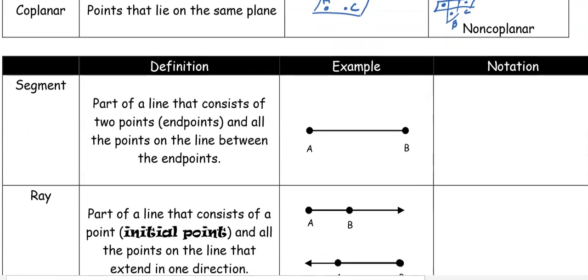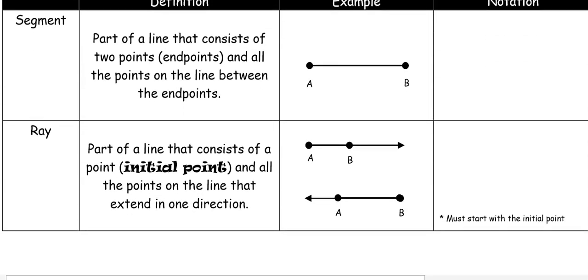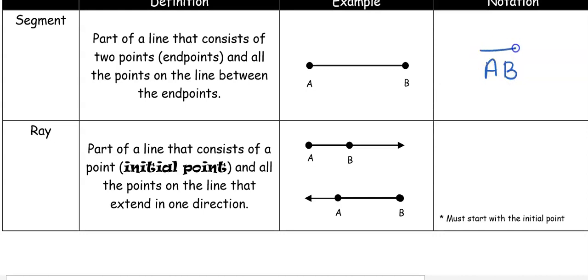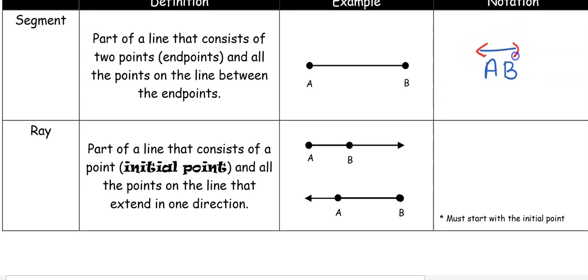A segment is a part of a line. The difference between a segment and a line is that a segment is just a chunk of it — a line extends forever, but a segment has a beginning and an end. This is where notation becomes really important: a segment has just a straight line above it with no arrows. If this were a line I would have arrows. Segment AB is the right answer; line AB is the wrong answer. One little change in notation completely changes the meaning.